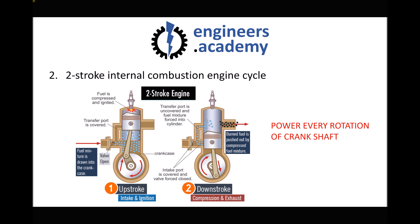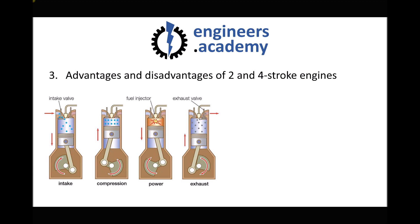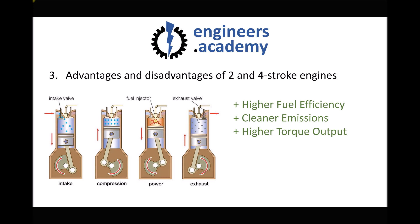Let's consider the advantages and disadvantages of each, beginning with the four stroke engine. First, there is higher fuel efficiency — all of the fuel in the chamber is combusted with nowhere to escape, so more fuel energy is converted to shaft power. This also leads to cleaner emissions because complete combustion produces fewer byproducts. Another advantage is that the closed chamber during the power stroke allows the four stroke engine to deliver higher torque.